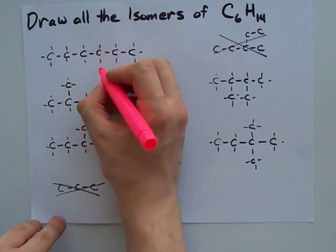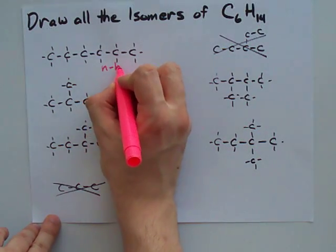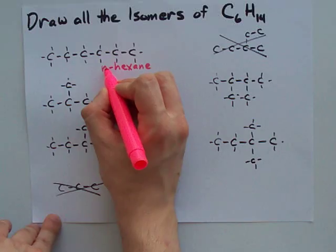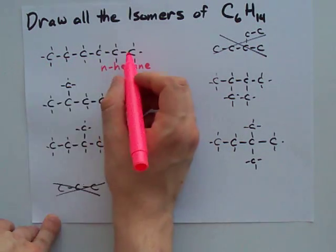Let's name them while we're here. This is just called N-hexane. It's 6 long. Actually, most people just call it hexane. I call it N because it's just normal. There are two names for it.